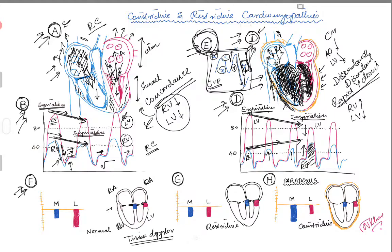What I want you to look at is a red dot here — this is called the lateral mitral annulus — and in the middle you have the medial mitral annulus. With tissue Doppler, you can measure how much displacement of the lateral mitral annulus is happening, then turn the probe and measure how much displacement of the medial mitral annulus is happening.